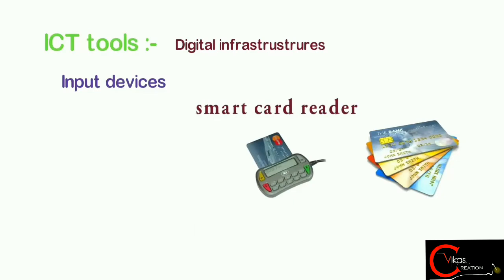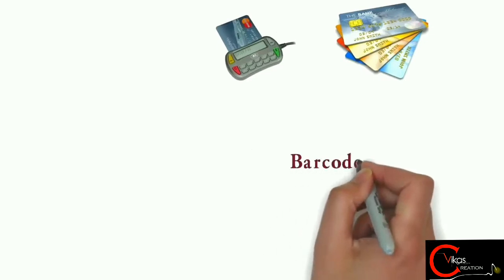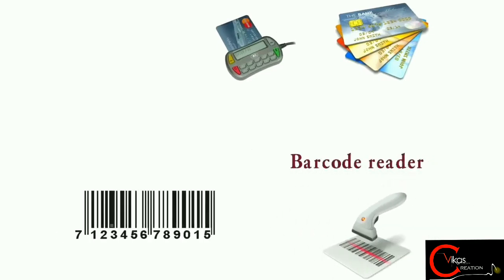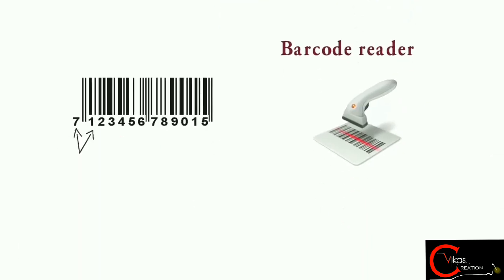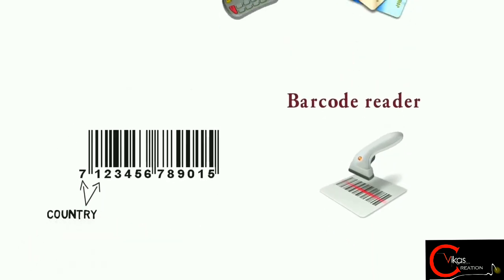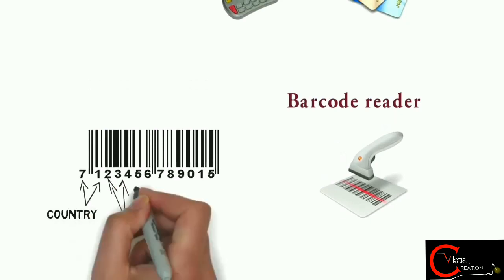In which a smart card contains information such as account number and transaction details. And also a barcode reader. A barcode is a combination of thin and thick lines which contains a number of nine digits.